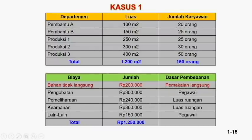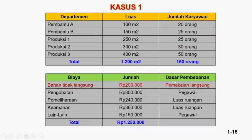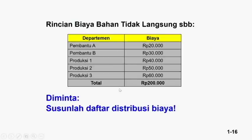Untuk pemeliharaan menggunakan dasar luas ruangan: 240.000 dibagi 1.200m² = 200 per m², lalu dikalikan luas masing-masing departemen. Misalnya departemen A mendapat 100/1.200 × 240.000. Bahan tidak langsung 200.000 sudah terdata pemakaian langsung: departemen A=20.000, B=30.000, produksi 1=40.000, produksi 2=50.000, produksi 3=60.000, total=200.000.